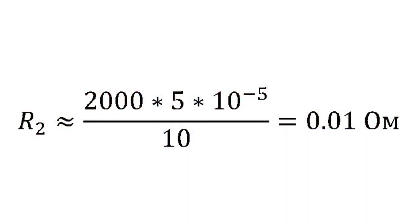For example, to measure currents of up to 10 amperes using an ammeter with 2000 ohms resistance and a maximum current of 50 microamps, you will need a shunt with 0.01 ohms resistance. R2 equals 2000 multiplied by 5 times 10 to the minus 5th power, divided by 10, which equals 0.01.